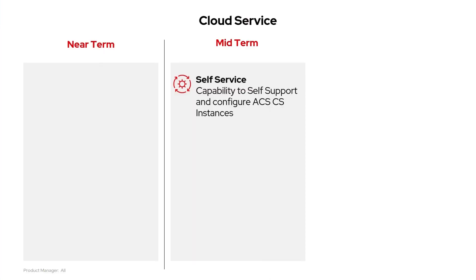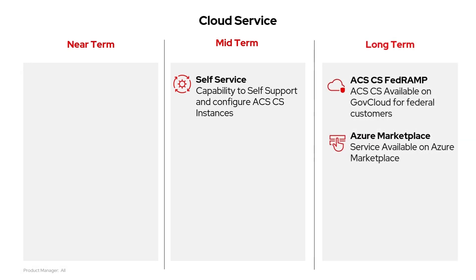On to ACS Cloud Service. In the midterm, we're examining ACS Cloud Service self-service capabilities, introducing self-service features that allow customers to manage and configure their ACS Cloud Service instances independently. This gives customers more autonomy over their instances and reduces reliance on support for routine configurations. In the long-term goals, ACS Cloud Service FedRAMP certification: we're working to make ACS Cloud Service available on GovCloud, meet federal compliance standards, and ensure federal customers have access to FedRAMP-certified service. Lastly, Azure Marketplace availability: we plan to bring ACS Cloud Service into the Azure Marketplace, simplifying procurement and allowing deployment for customers using Azure and expanding accessibility.